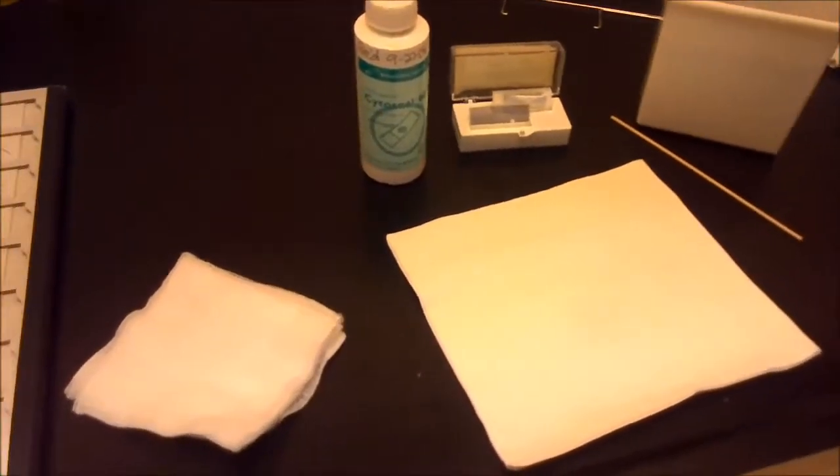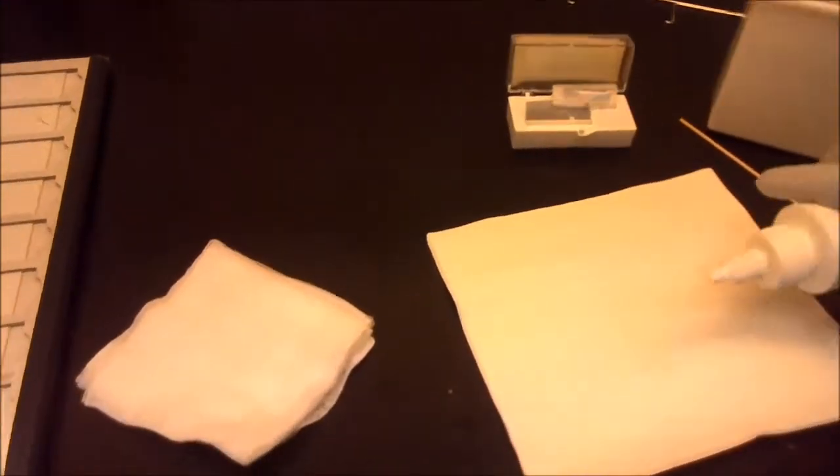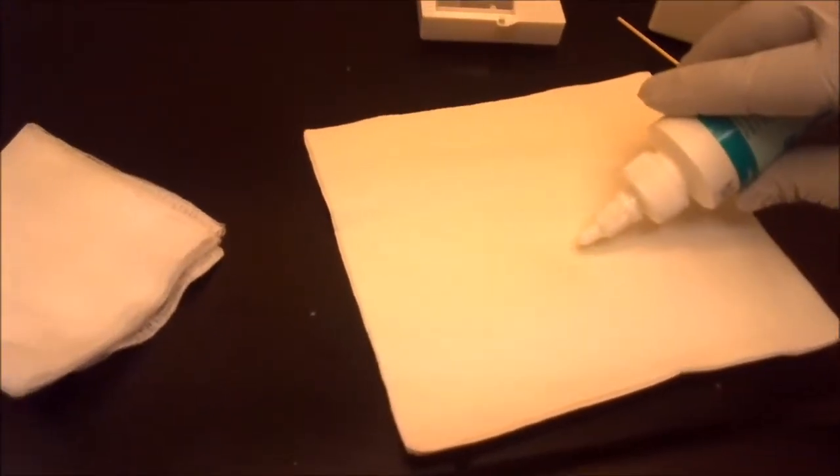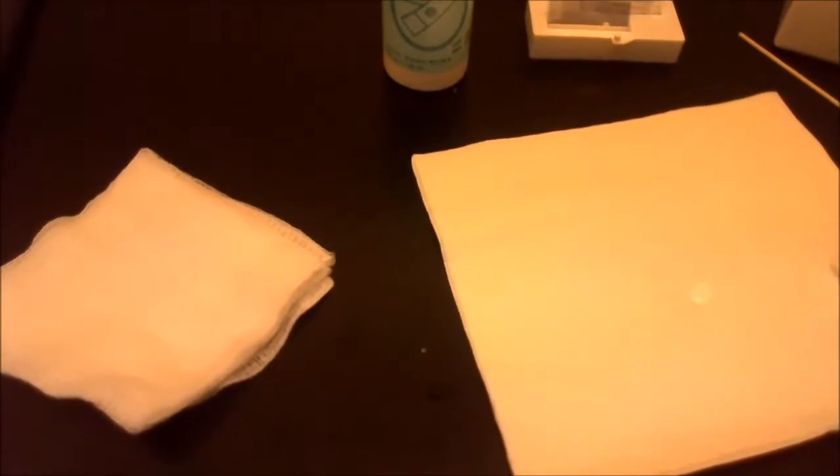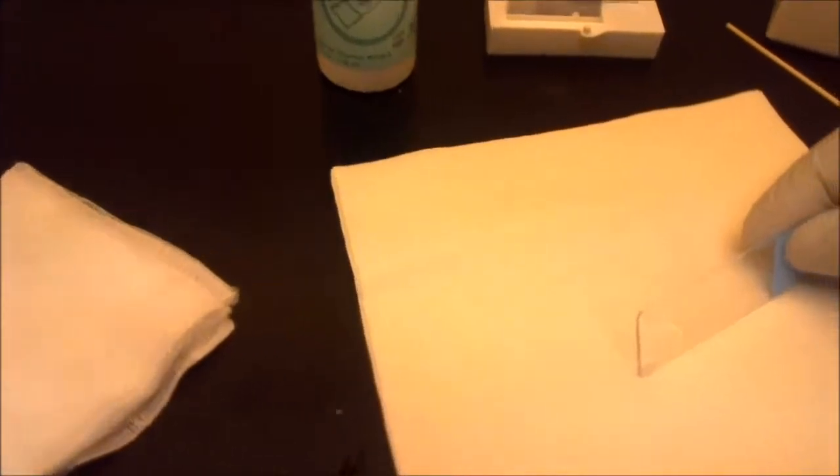We're going to start showing you how to coverslip. We're going to put the mounting media on the cover glass. You can barely see it, but it's on there. You just put a drop of it. Then you take a slide that was in the xylene and start coverslipping from the bottom, the liquid from the bottom going up.